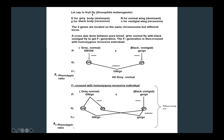In Drosophila melanogaster, the allele capital G is dominant for grey body, while small g is recessive for black body. Capital N is dominant for normal wing, and small n is recessive for vestigial wing — vestigial wings referring to short, non-functioning wings. The two genes are located on the same chromosome at different loci, so gene G and gene N are linked genes, and the genotype of an individual is written slightly differently.